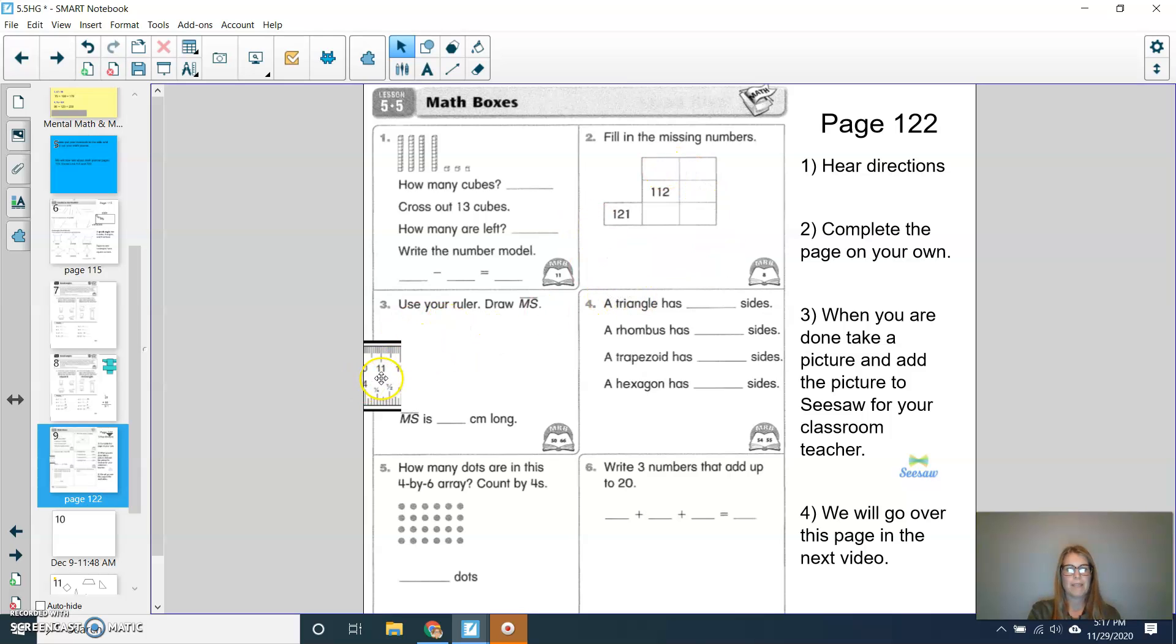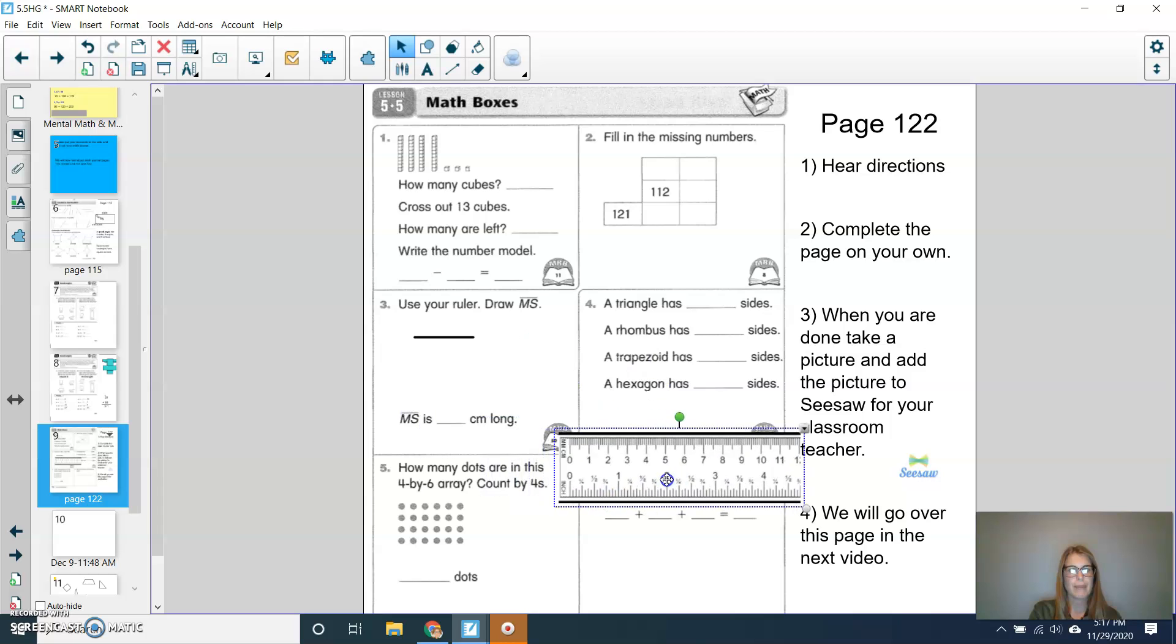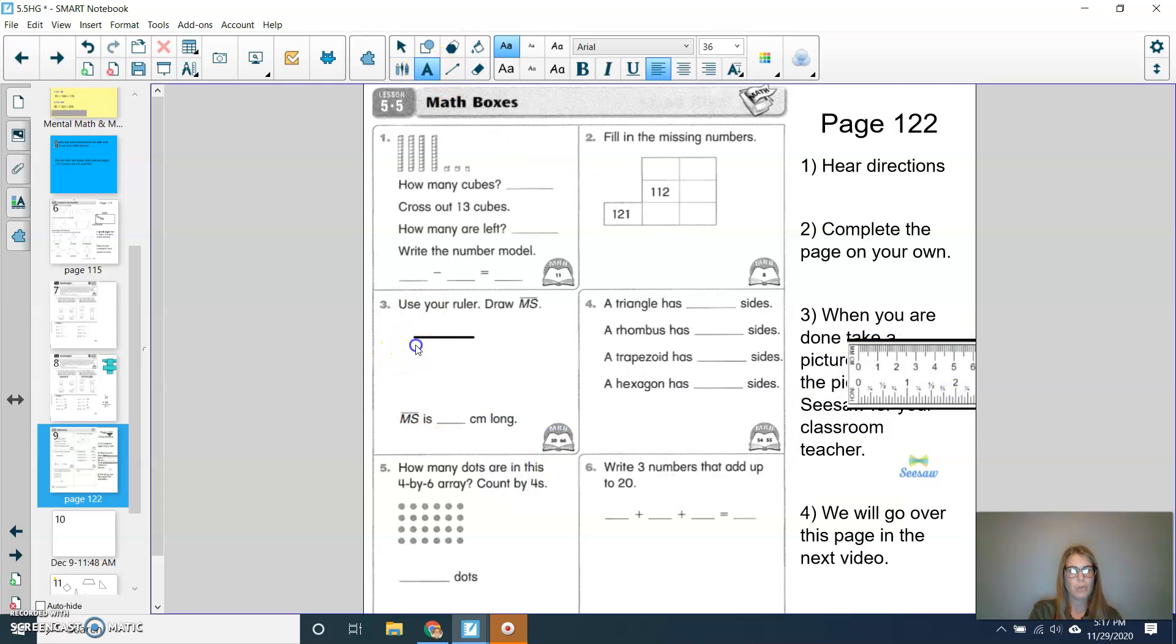Use your ruler and draw a line segment, and then label it MS. And then you're going to tell me how long that line segment is. So I can do this one with you today. So if I draw a line, and I'm going to start at my zero, and it looks like I'm going to make it three centimeters long, and then I need to label it. So I'm going to grab my letters quick. And I would label one side M, and I would label the other side S. Okay? And then also my line segment, if you want to put a little dot above or on the ends of each of those, to show where you would mark them, and then write how long your line segment is.